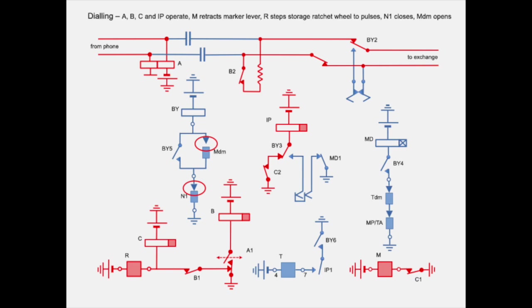These pulses operate rotary magnet R at the bottom left which steps the ratchet wheel. Relay C holds during inward pulsing. This closes the loop of marking magnet M at the bottom right of the diagram. Magnet M lifts the marking lever so it can move freely over the pins during rotation of the ratchet wheel.